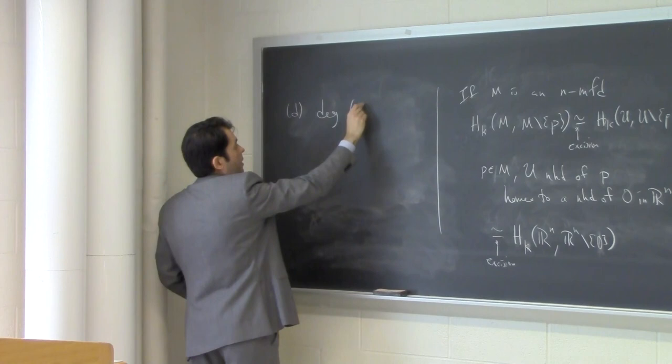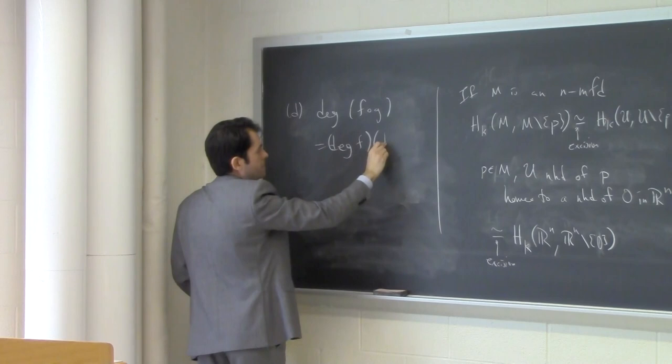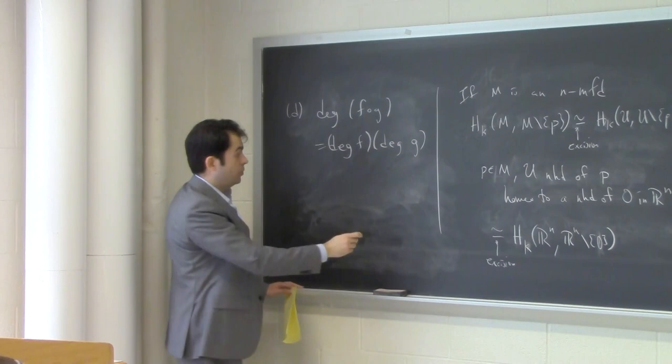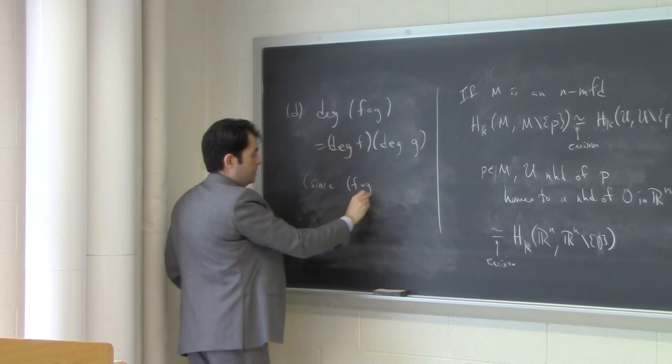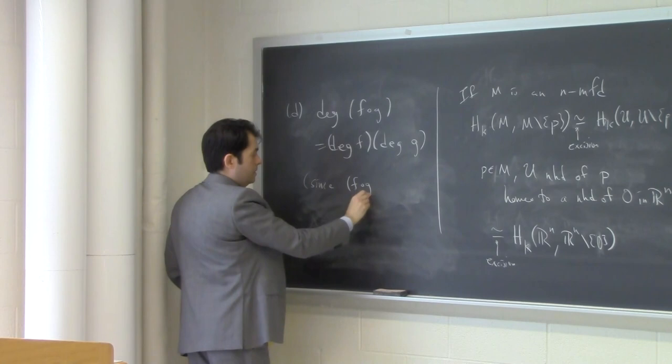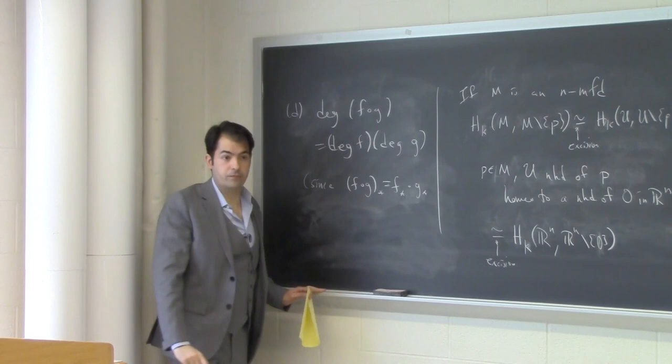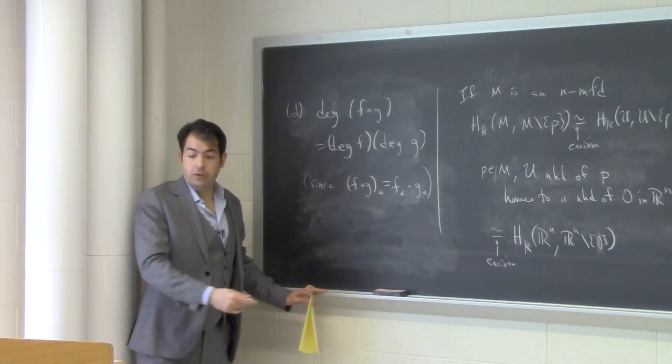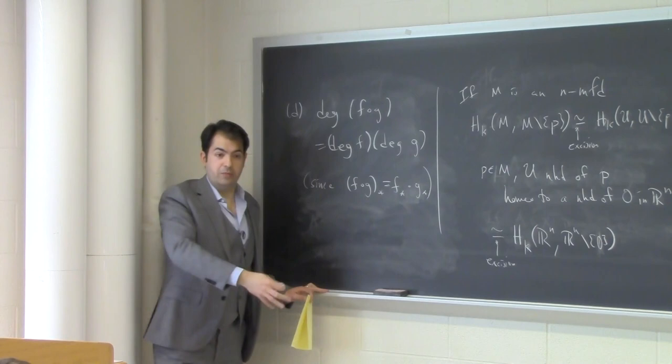Another property: the degree of a composition is equal to the product of the degrees. This is because the induced map from the composition is the composition of the induced maps. When acting on Z, g_* multiplies by deg(g), then f_* multiplies by deg(f), so the composition multiplies by the product.